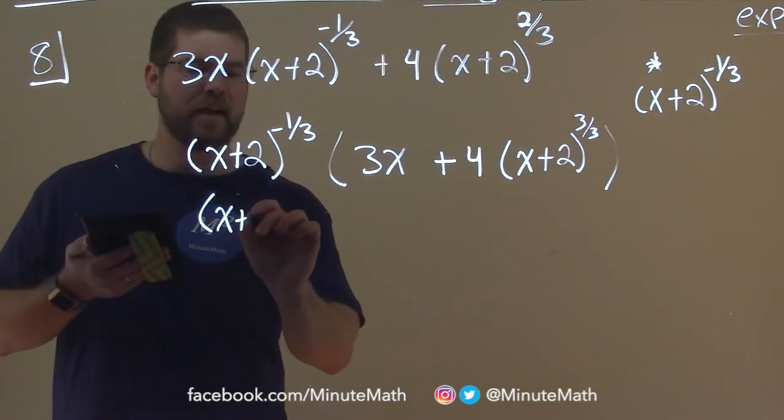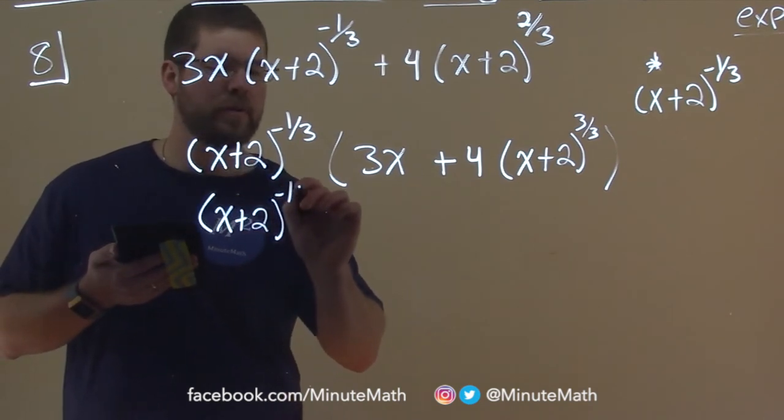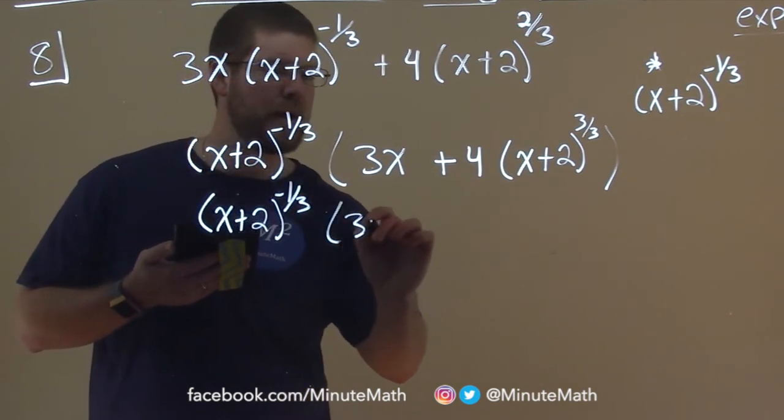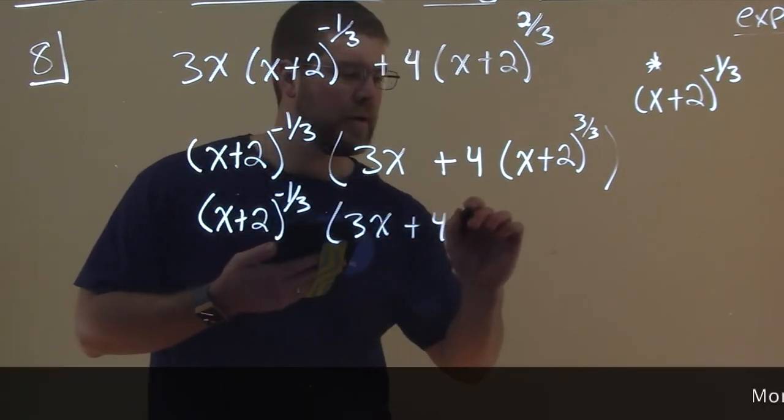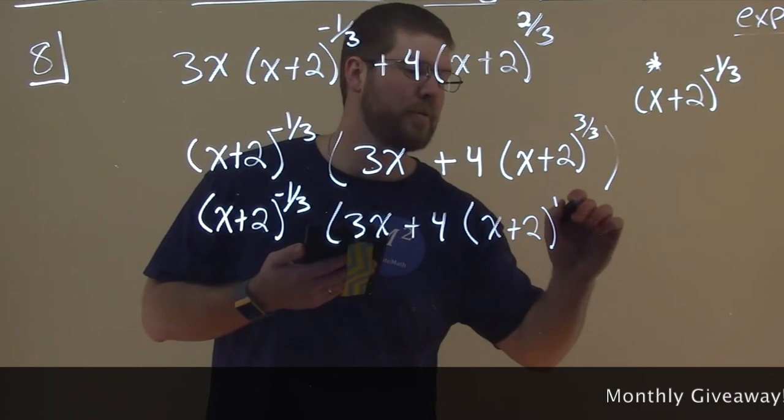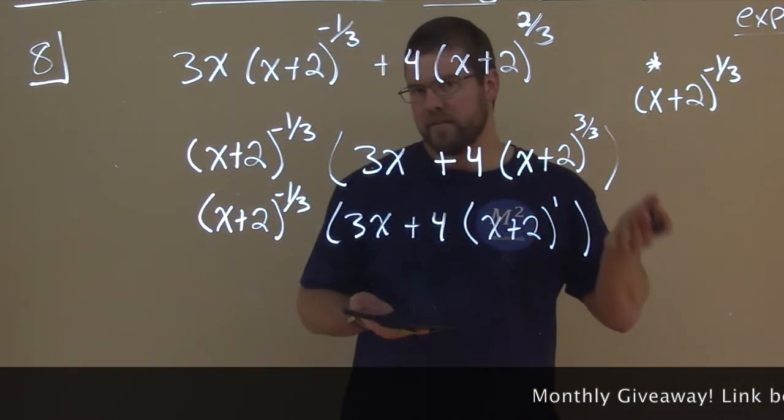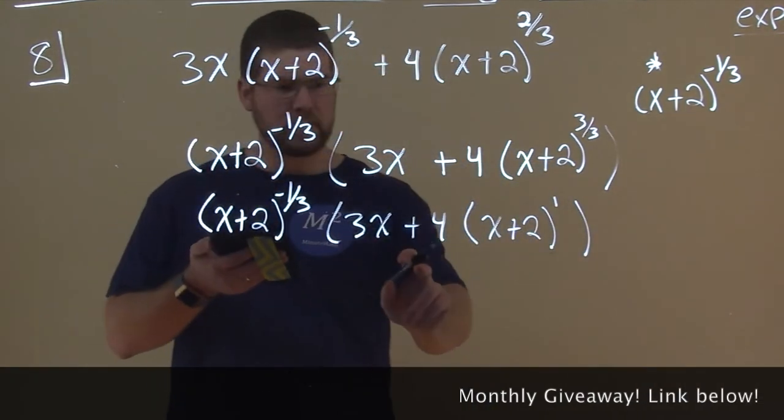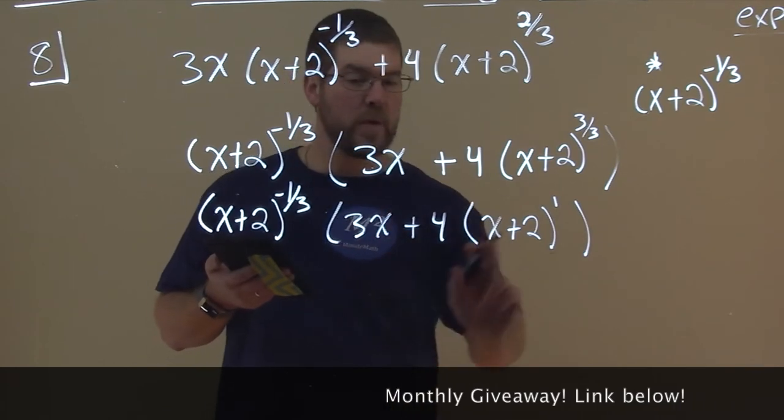I'll take my time. (x+2) to the negative 1/3 times [3x + 4 times (x+2) to the 1 power], which we don't really write to the first power, right? So now let's go simplify. This here, we know we can simplify some.